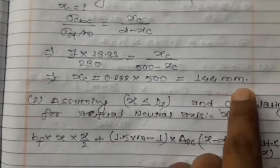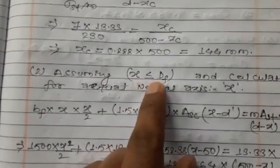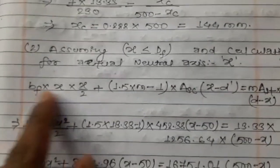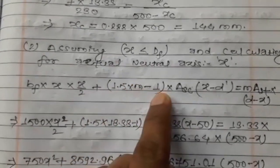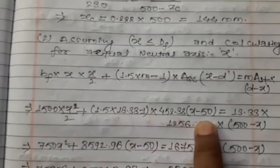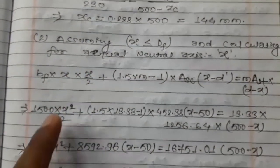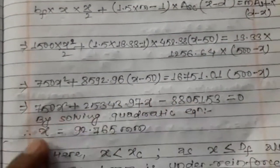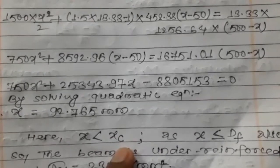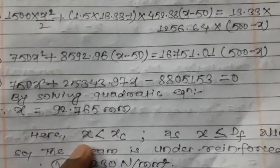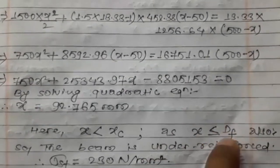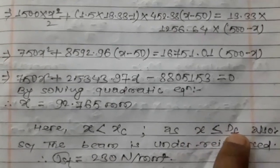The critical neutral axis x_c = 1.44 mm² (ratio-based). Checking x ≤ d. For the actual neutral axis, using the equation: 1.5(m − 1) × A_c × (x − d') = m × A_st × (d − x). Solving this quadratic equation gives x = 92.765 mm. Since the critical neutral axis was 144 mm and x = 92.765 mm, x is less than x_c. Also, x = 92.765 mm is less than d_f = 100 mm.